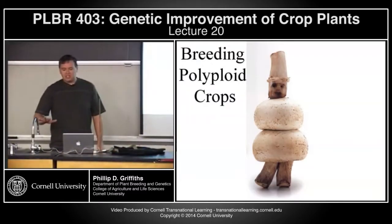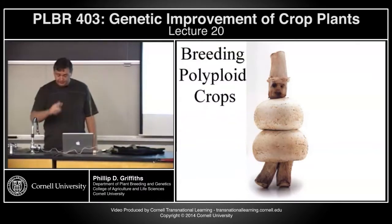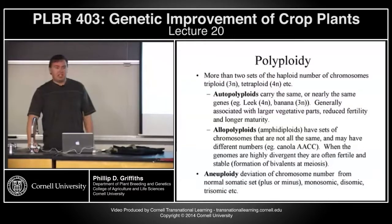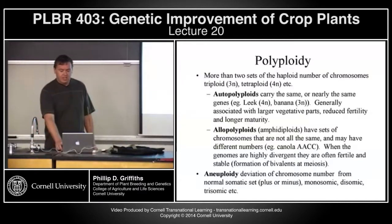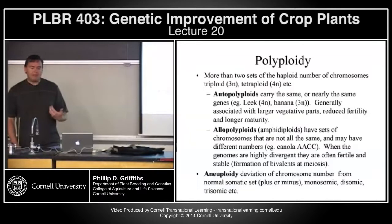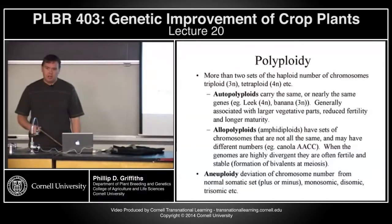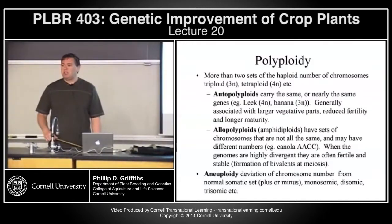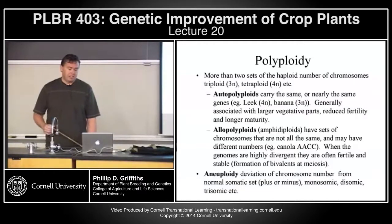This is the last of the six lectures, and I'm going to talk about polyploids in breeding and domestication. A polyploid is basically when we increase the haploid sets of chromosomes beyond the diploid level. The diploid is probably the more natural type, but what you find in domesticated crop species is we have a lot of polyploid crops — that is not necessarily the natural state of the wild relatives in many of these cases.